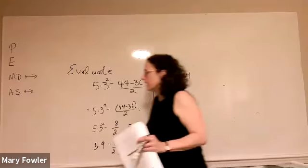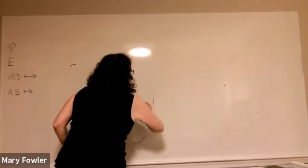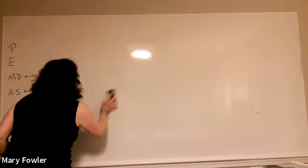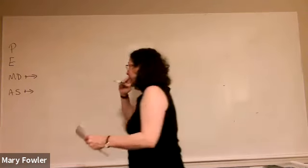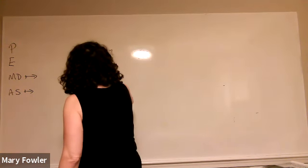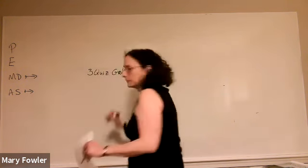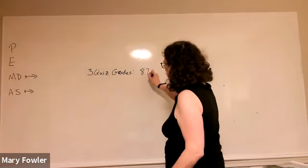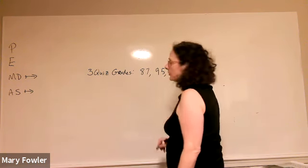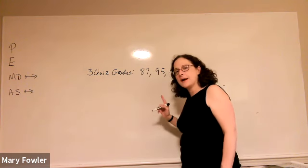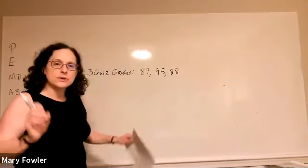Okay, I want to go and talk about average now. So if you took three quizzes in our class, let's write those down: three quiz grades - 87, 95, and 88. Those are your three quiz grades and we have to find the average quiz grade. So what we do to average the quiz grades is we add them together.